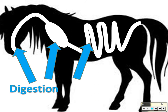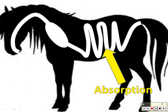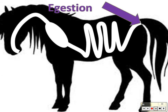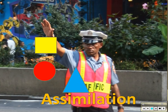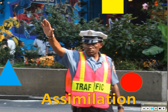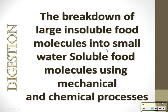Then you get digestion — turning big molecules into small molecules, which happens in many different places. Absorption moves food molecules from the digestive system to the blood. Egestion is the great escape. There's also assimilation, where your body tells the food molecules where to go and what to do. Food molecules are insoluble and need to become soluble. There is a mechanical and a chemical process: mechanical turns big pieces into small pieces to increase surface area.